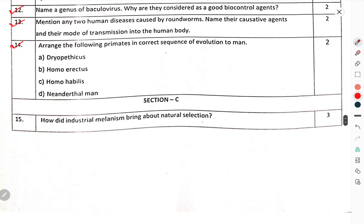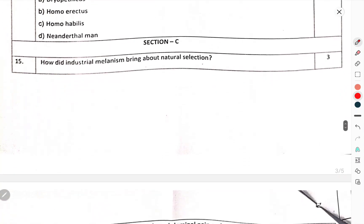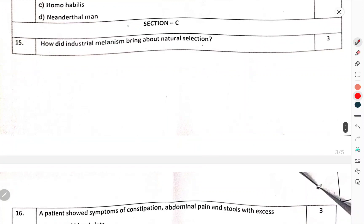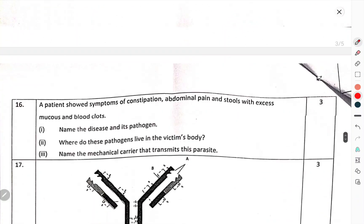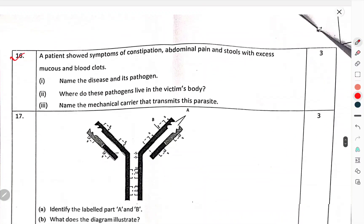Arrange the following primates in the correct sequence of evolution of man. Section C — How did industrial melanism bring about natural selection?